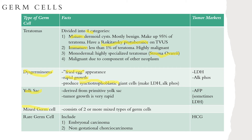Yolk sac tumors are derived from the primitive yolk sac. Tumor growth is very rapid, and these tumors can have elevations in alpha-fetoprotein (AFP); LDH may also be increased. Mixed germ cell tumors contain two or more types of germ cells, with the most common combination being dysgerminoma mixed with yolk sac. Rare germ cells include embryonic carcinomas and non-gestational choriocarcinomas.